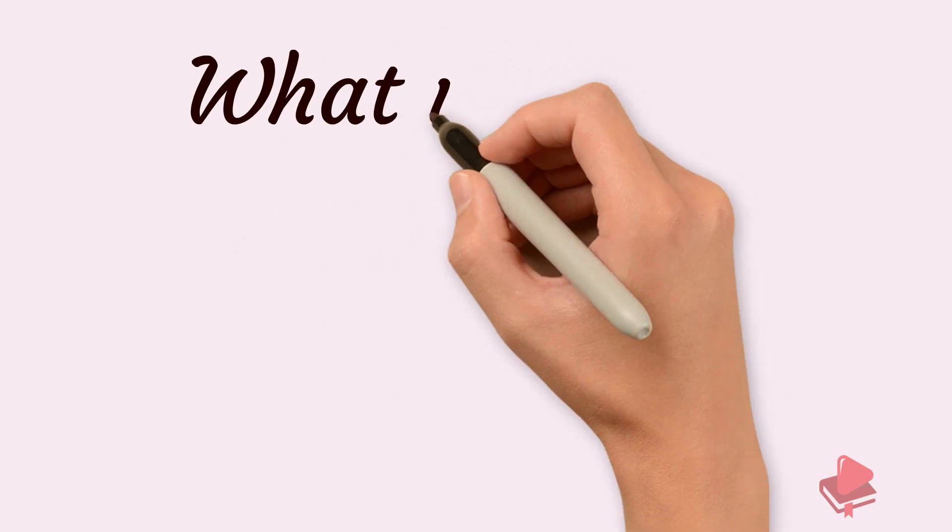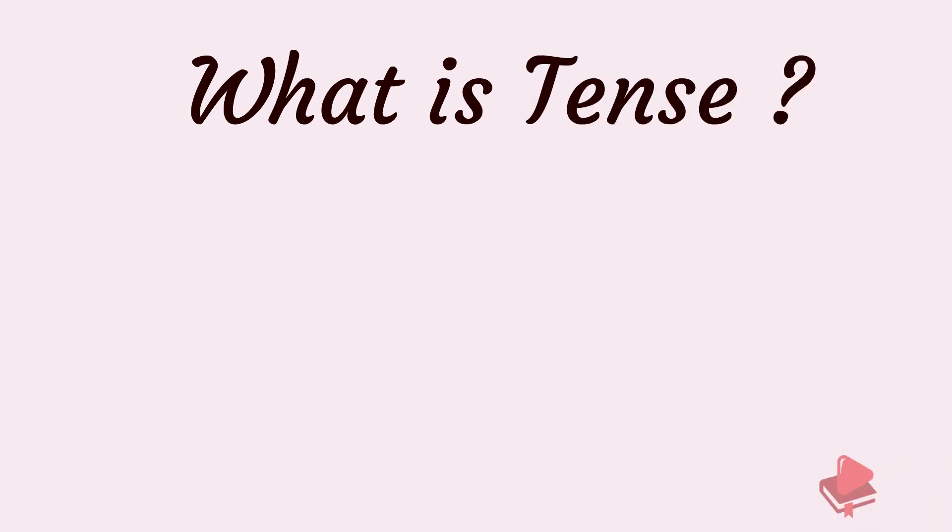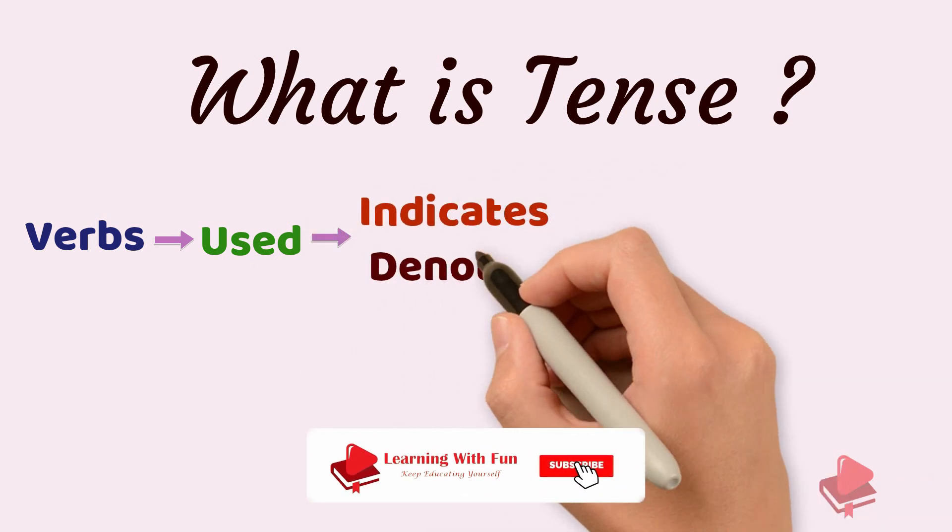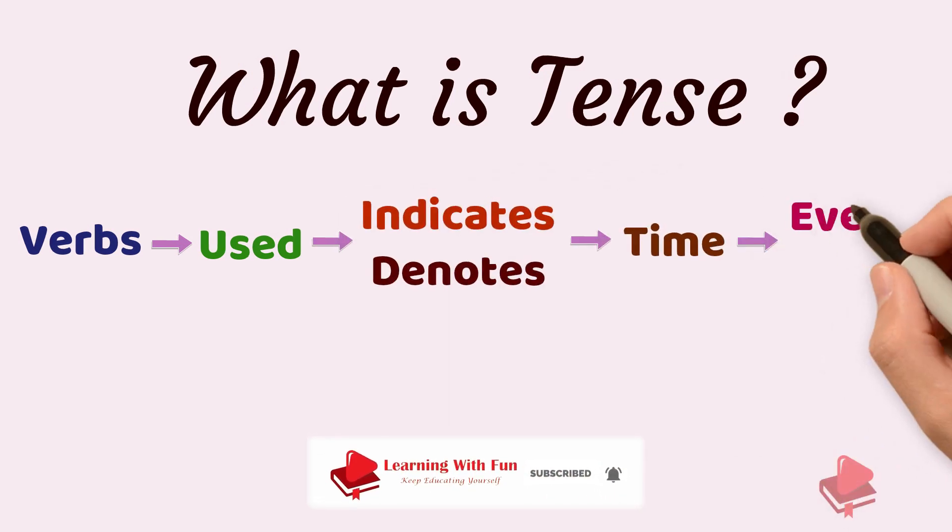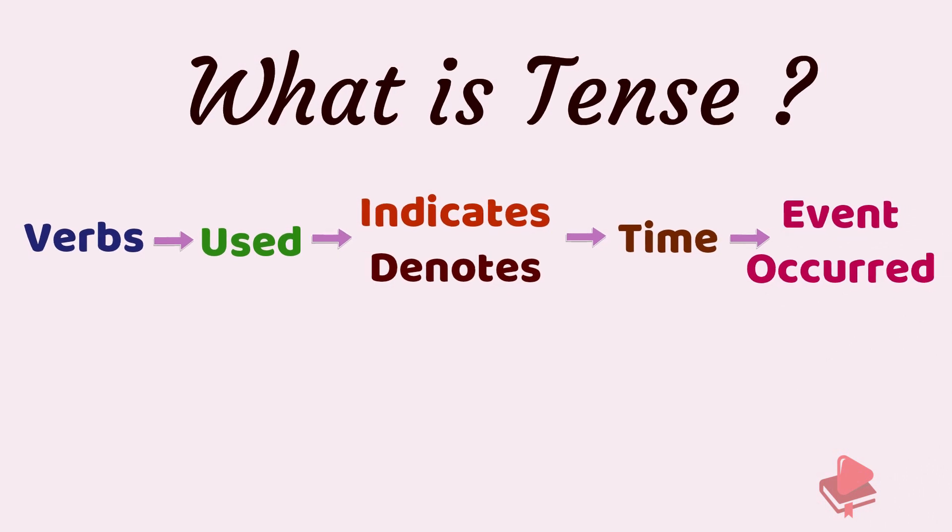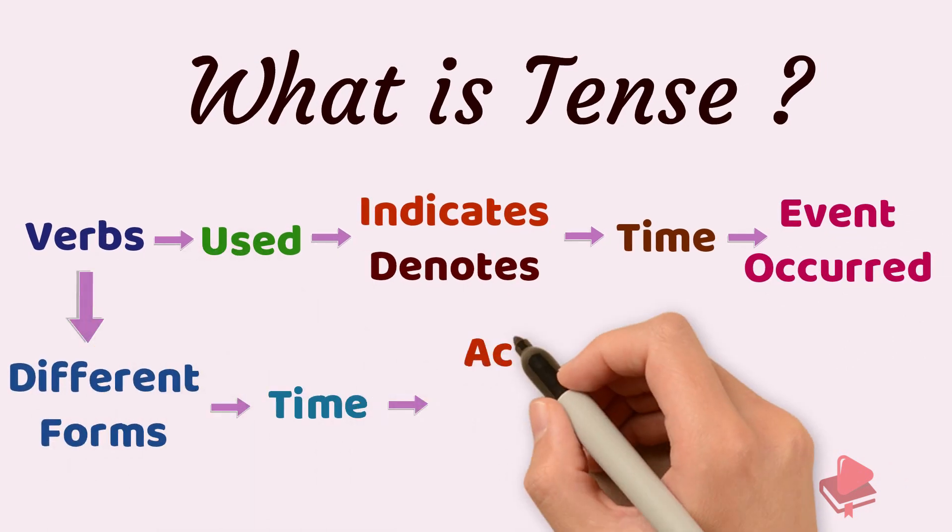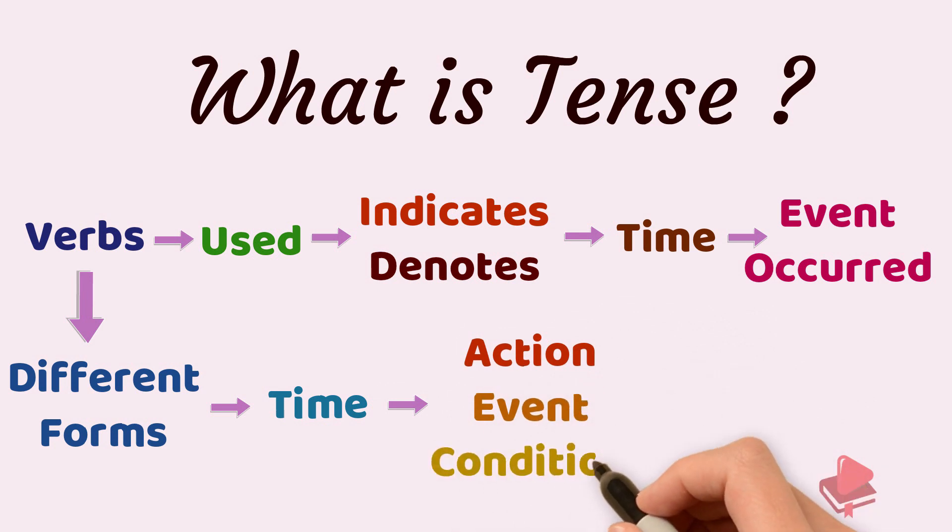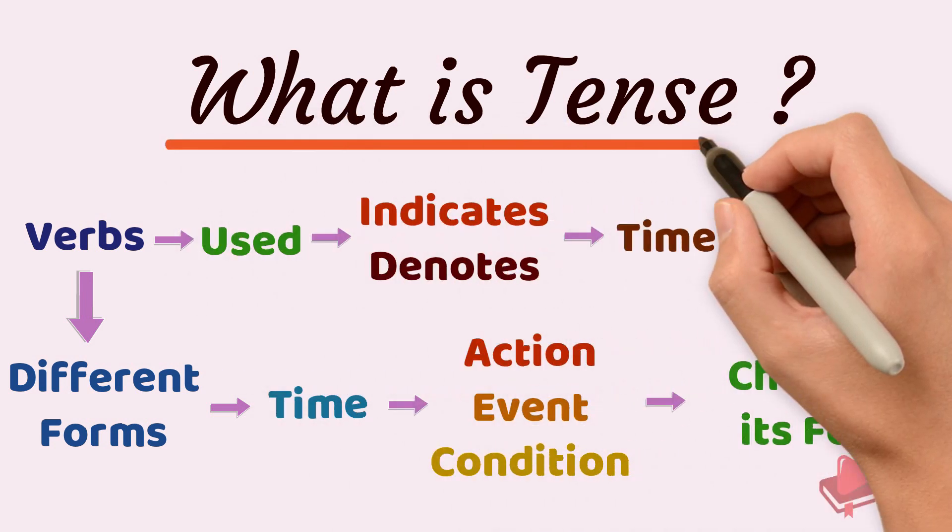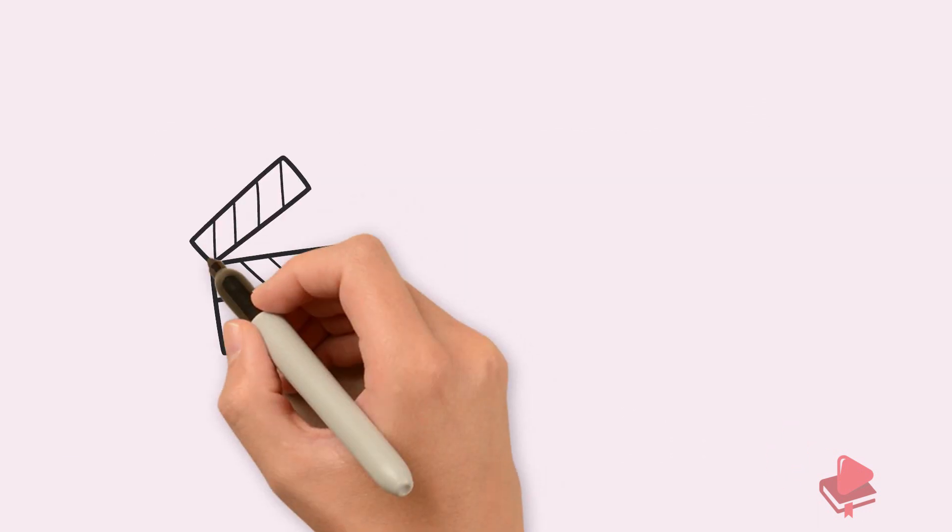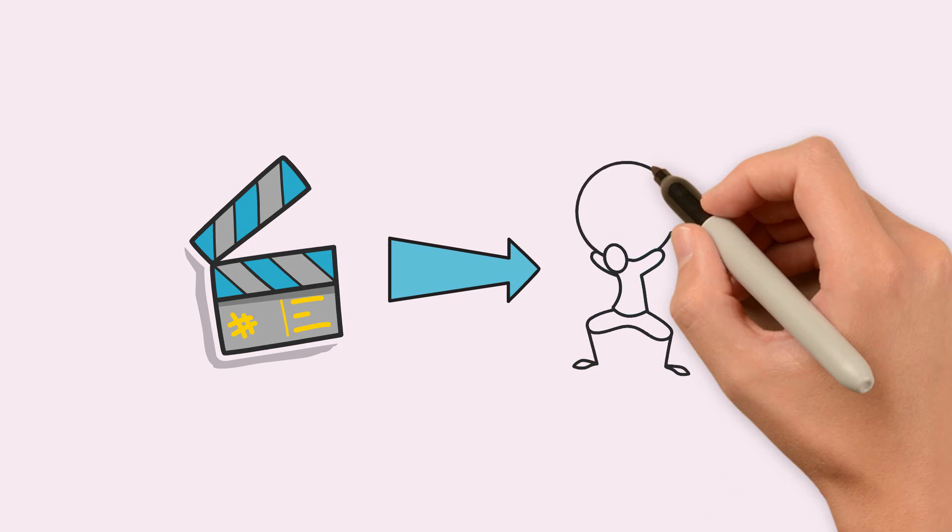What exactly is a tense? In English grammar, verbs are often used in a way that it indicates or denotes the time when an event occurs. These verbs that take a different form to indicate the time of an action, event, or condition by changing its form are called tenses. That is, it actually describes when an action happened with respect to time.